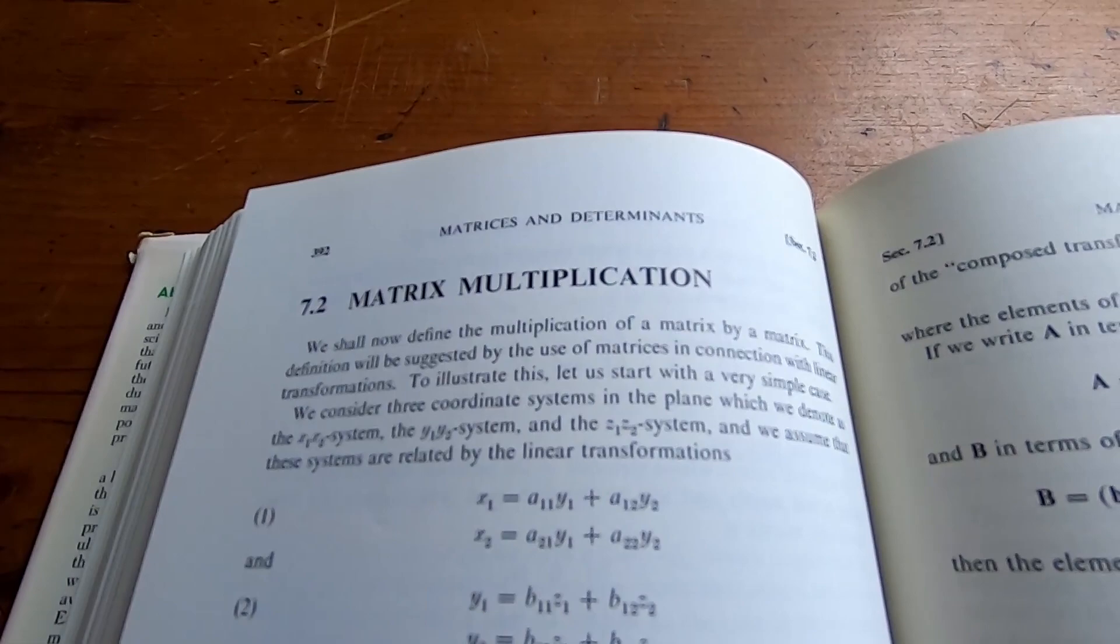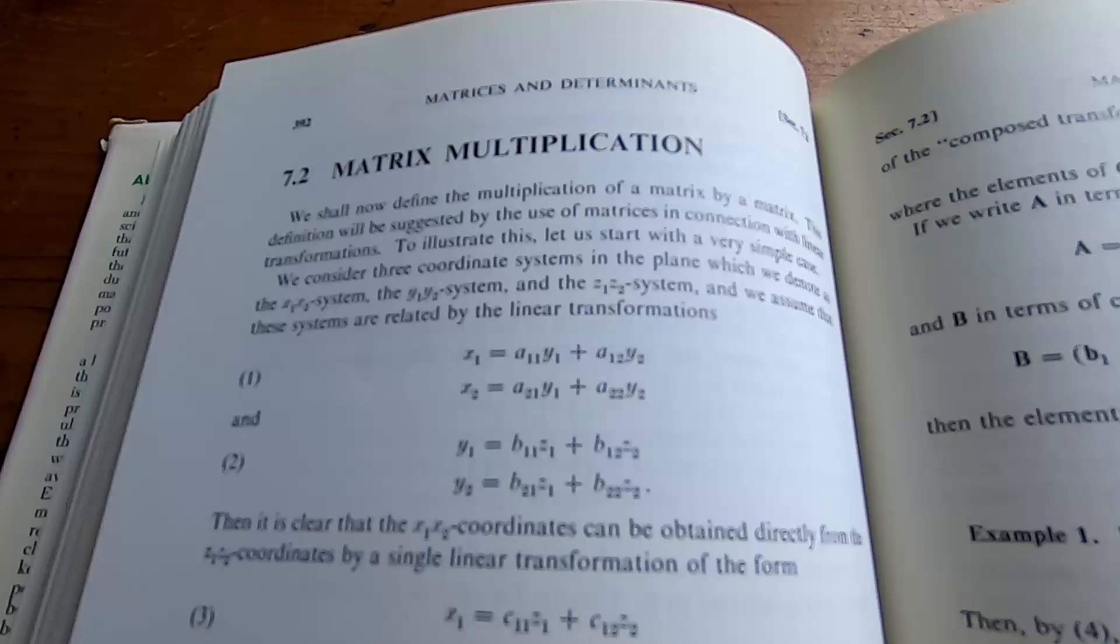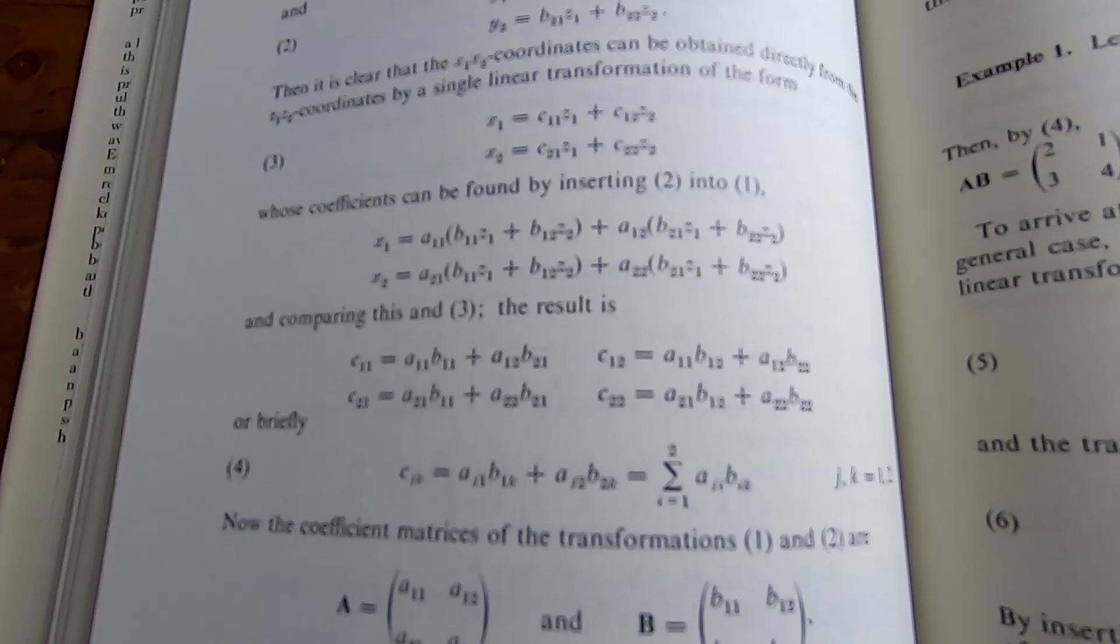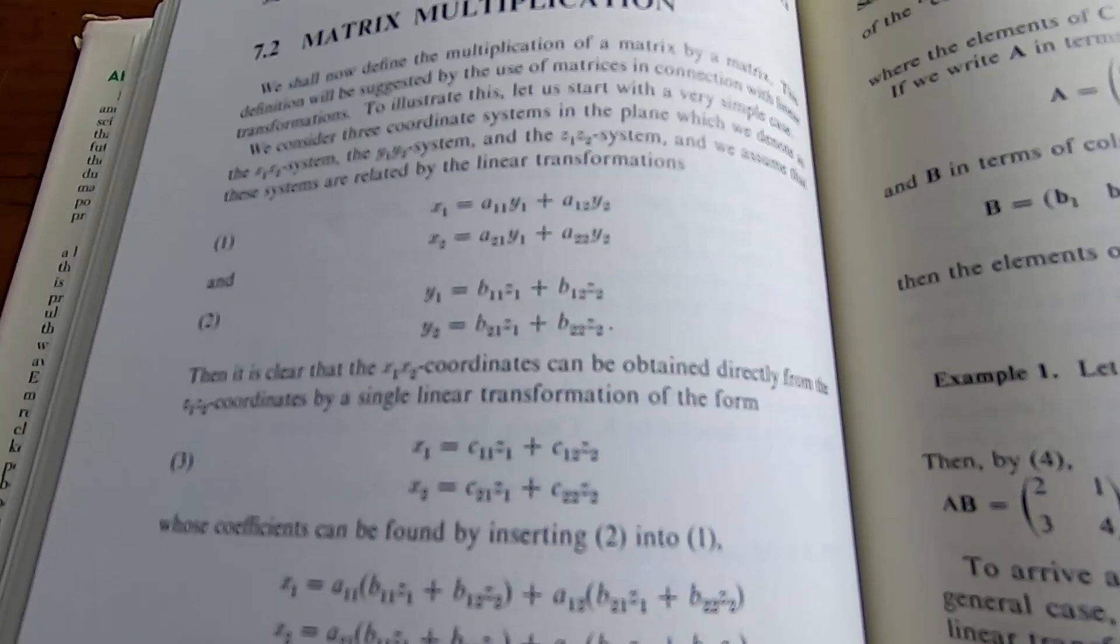Kreyszig actually reviews matrix multiplication. I mean, he goes over everything. This book has so much math. It is such a good book. And you can probably get it for just a few dollars. I mean, it is amazing how much math is in this book.